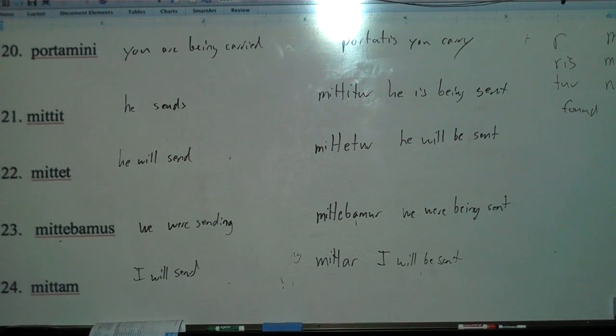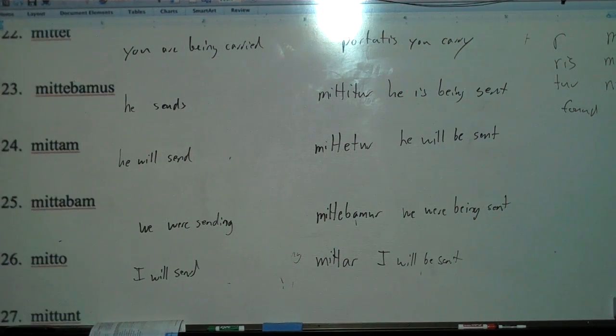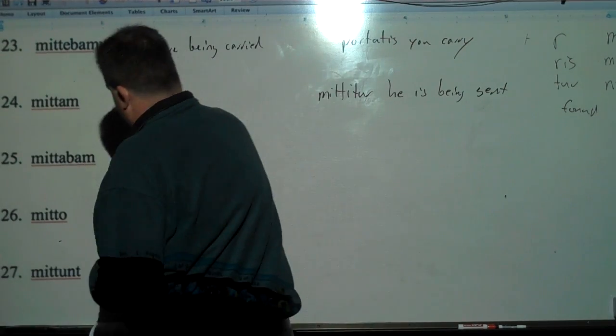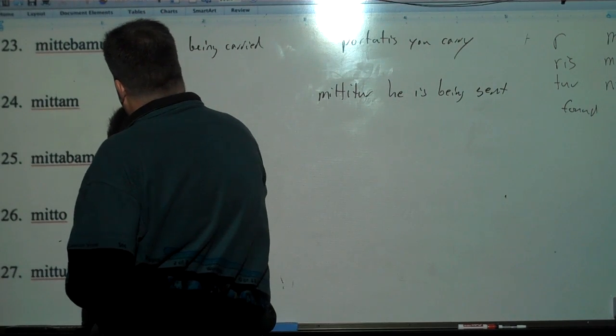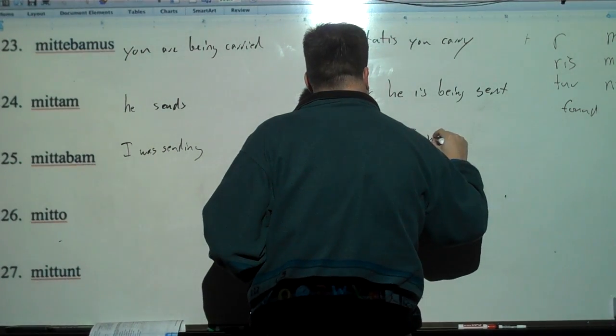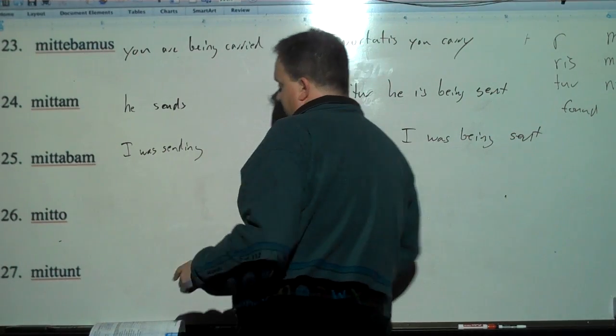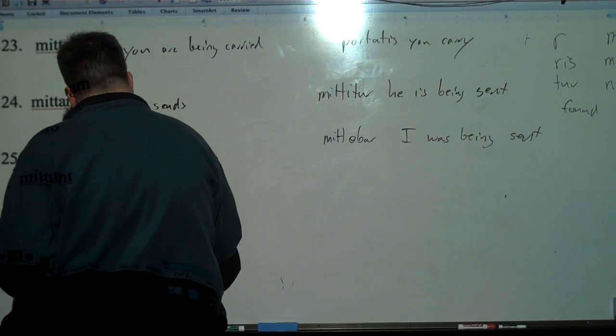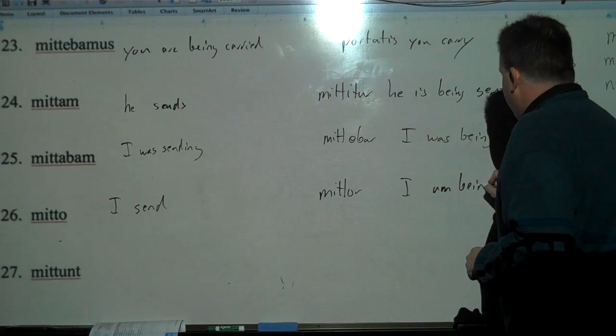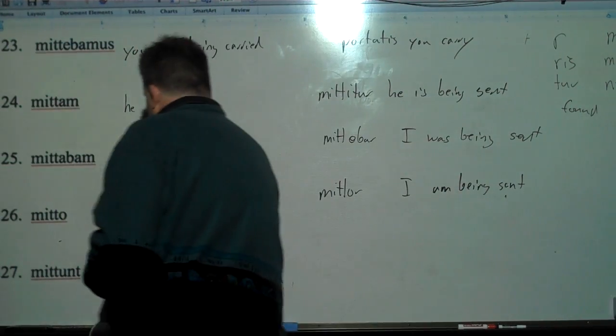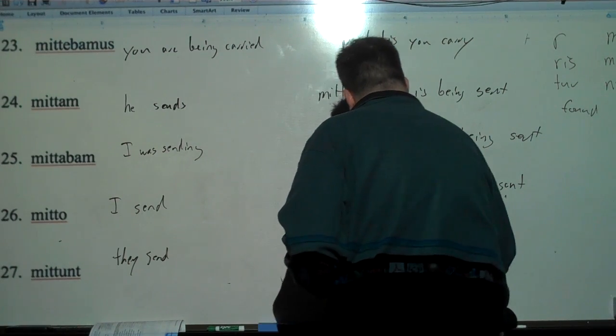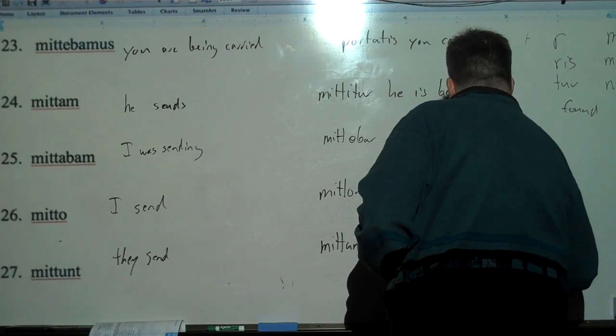We have one more on that. Let's just look at the last three here. Mittebar, that's imperfect. I was sending. Mittebar. I was being sent. I'm blocking the view here, I'm sorry. Mittor is I send. And then we make mittor. I am being sent. And then mittunt, they send. And the last one, mittuntur, they are being sent. Bravo.